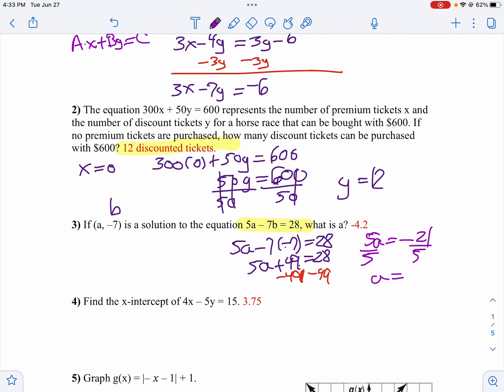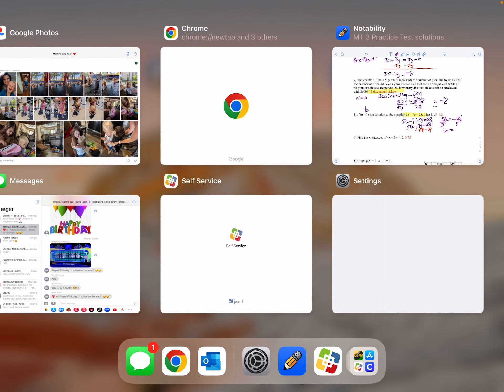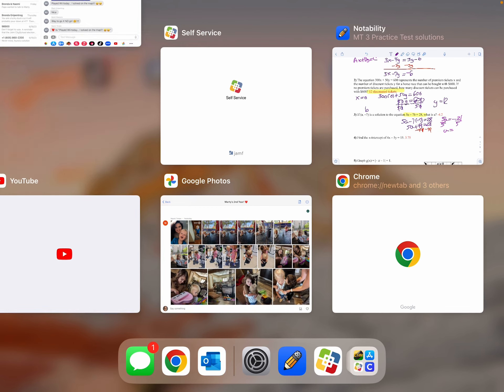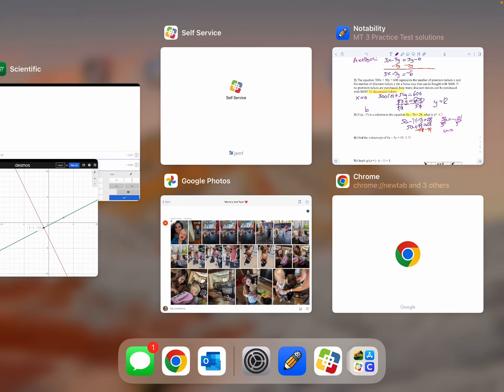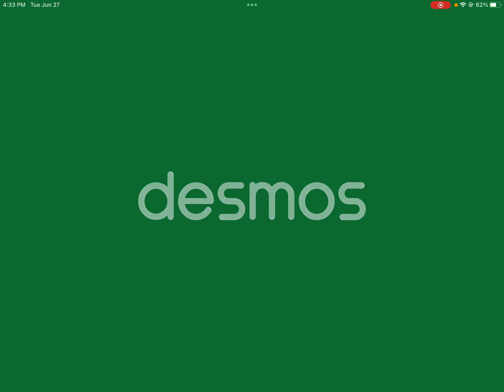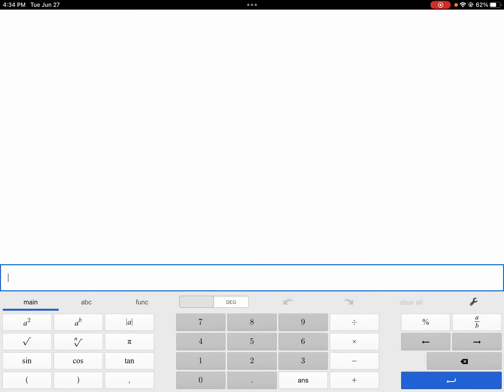So we divide both sides by 5. Now we'll take negative 21 divided by 5. I can't do that in my head. So we'll take negative 21 divided by 5. And we get negative 4.2.